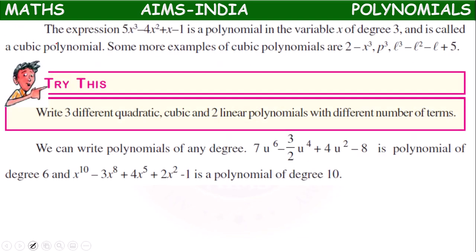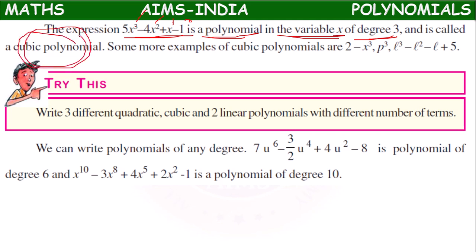The expression 5x cubed minus 4x squared plus x minus 1 is a polynomial in variable x of degree 3, because the powers are 3, 2, 1, and 0 — the highest power is 3. So it is called a cubic polynomial. Some more examples of cubic polynomials are 2 minus x cubed, p cubed, and l cubed minus l squared plus l plus 5.